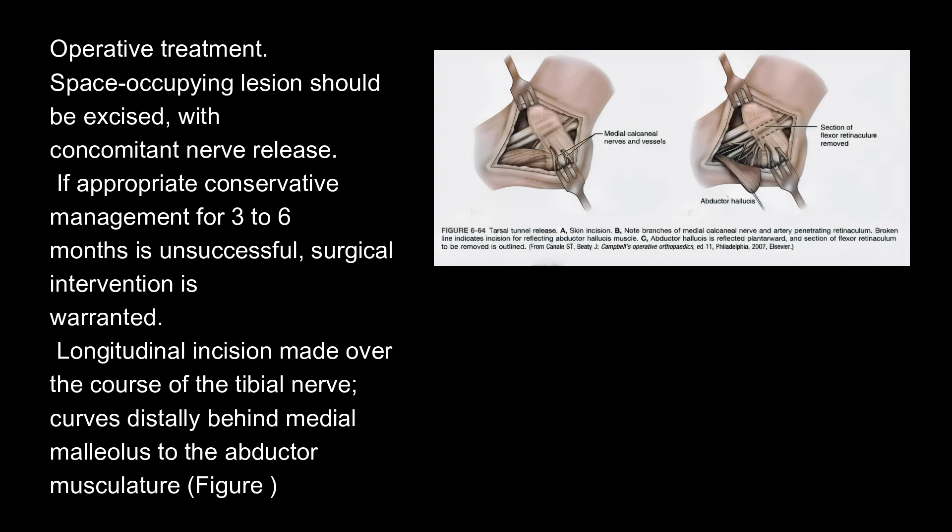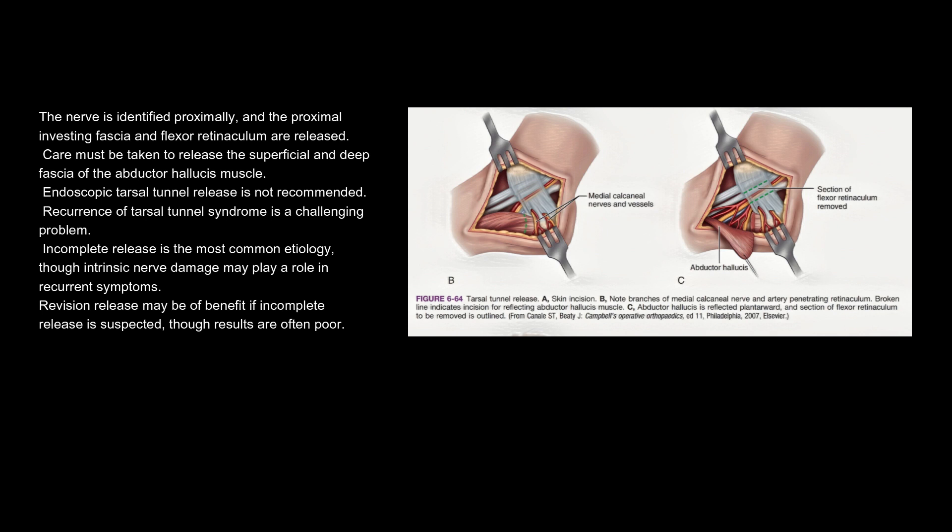For operative treatment, space-occupying lesions should be excised with concomitant nerve release. If appropriate conservative management for three to six months is unsuccessful, surgical intervention is warranted. A longitudinal incision is made over the course of the tibial nerve, curving distally behind the medial malleolus to the abductor musculature. The nerve is identified proximally, and the proximal investing fascia and flexor retinaculum are released. Care must be taken to release the superficial and deep fascia of the abductor hallucis muscle. Endoscopic tarsal tunnel release is not recommended.